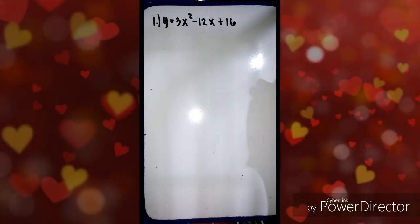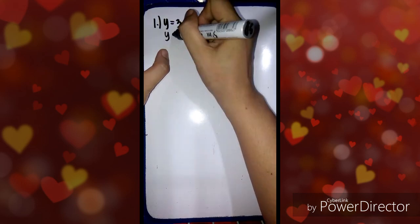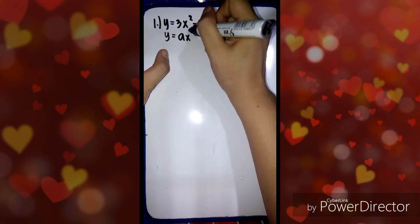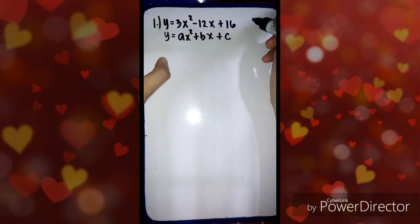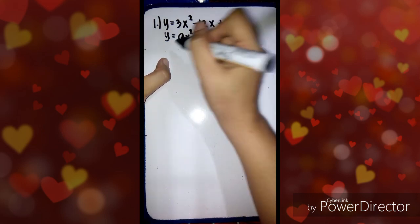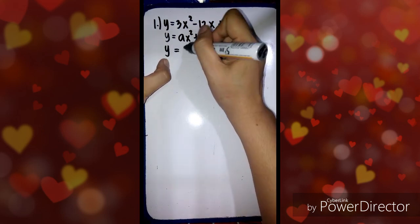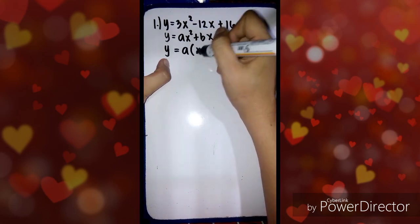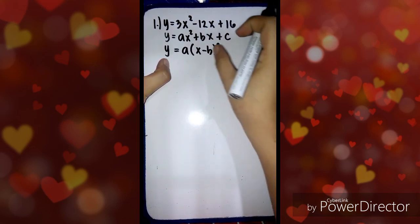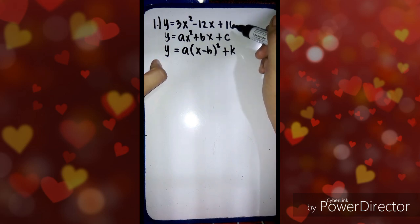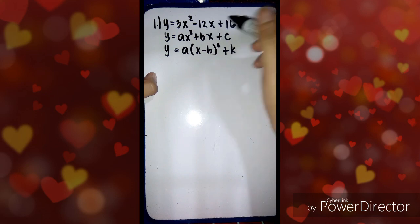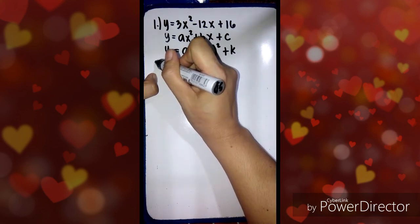Example number one is y equals 3x squared minus 12x plus 16. This is in the form of general form, which is ax squared plus bx plus c. We are going to transform it into vertex form, which is in the form of y equals a times the quantity of x minus h squared plus k.